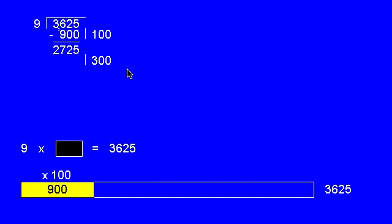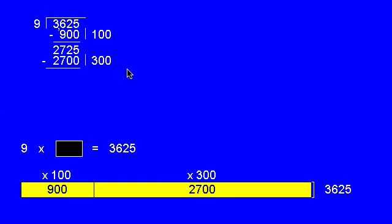So, 300 multiples gives us 2700. And 25 left. And next, 2 multiples give us 18. And 7 remainder.